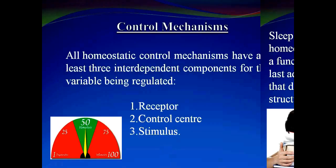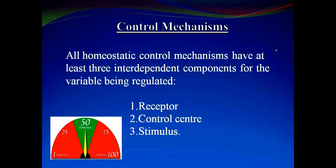We will discuss further how these control mechanisms occur. Simply, these control mechanisms occur via three parts: the receptor, control center, and stimulus. We will discuss this part later on.